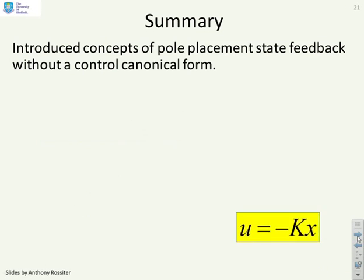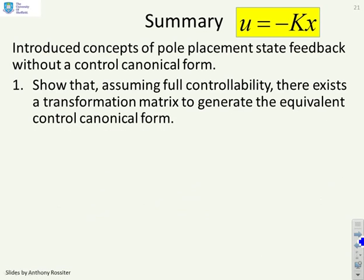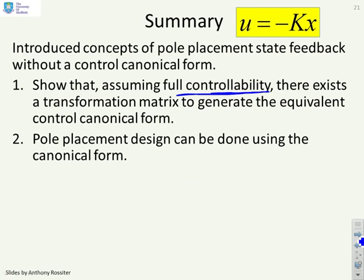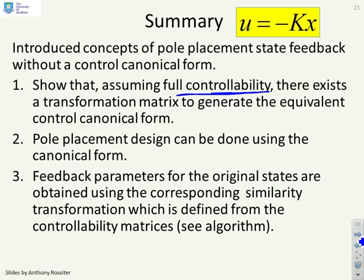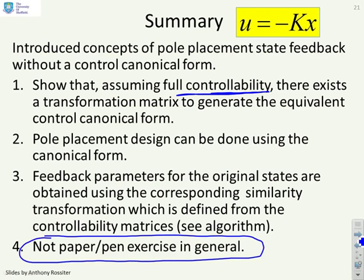In summary, we've introduced pole placement state feedback without a control canonical form, and shown that assuming full controllability there exists a transformation matrix to generate the equivalent control canonical form. Pole placement design is done using the canonical form, and then the feedback parameters for the original system are obtained via a similarity transform defined from the controllability matrices. Note this is not a paper-and-pen exercise in general due to the matrix multiplications and inversions involved.